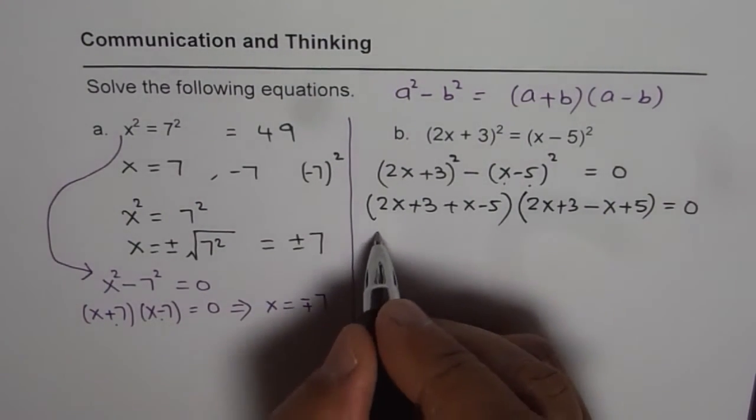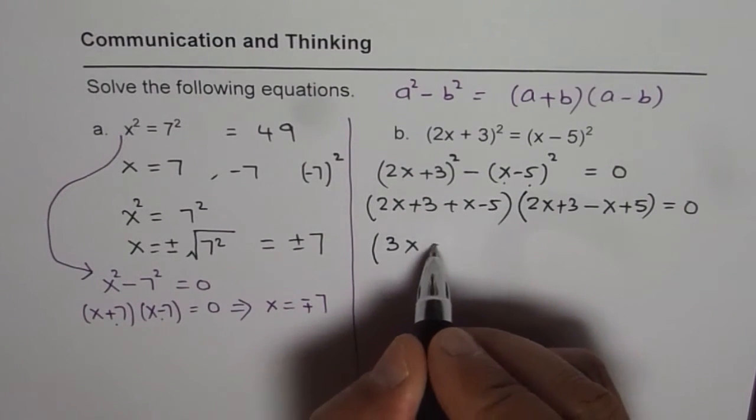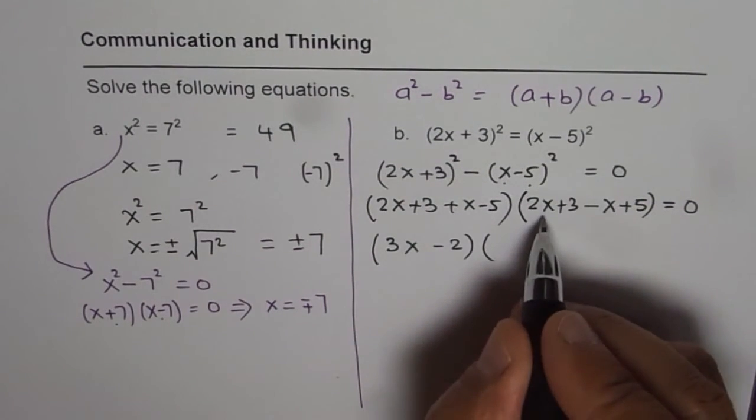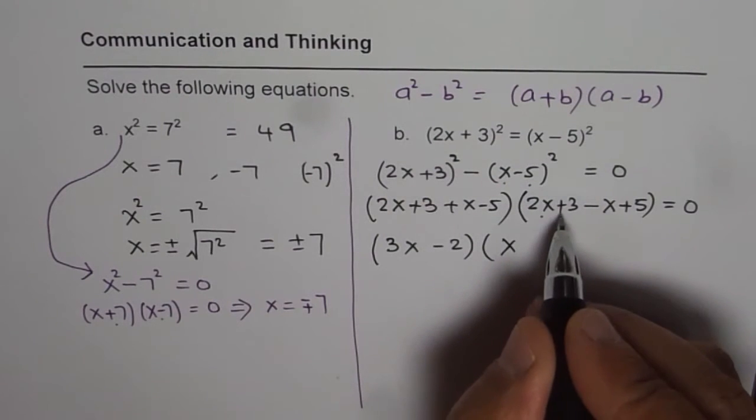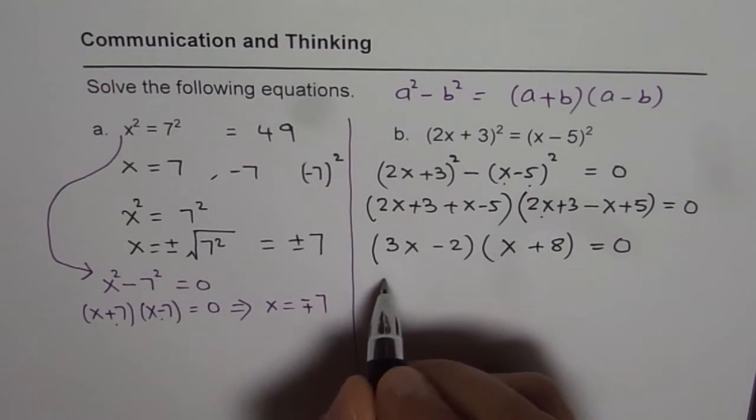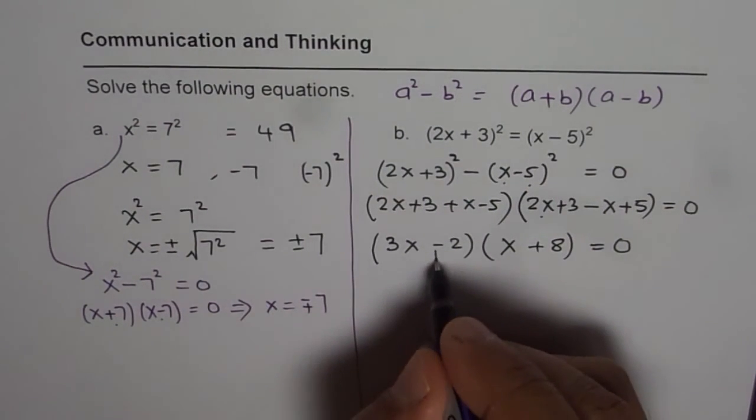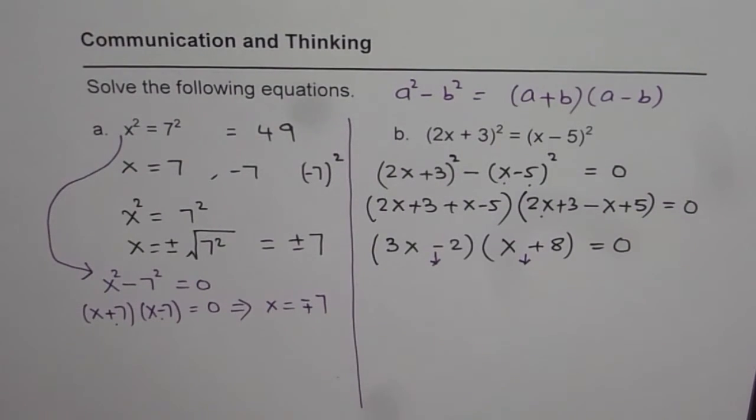Now we can combine the like terms. We get 3x and 3 minus 5 is minus 2. 2x minus x is x. 3 plus 5 is 8. Equals to 0. Now 3x minus 2 equals to 0. We can solve for each. Right? Solve for this and the other factor.